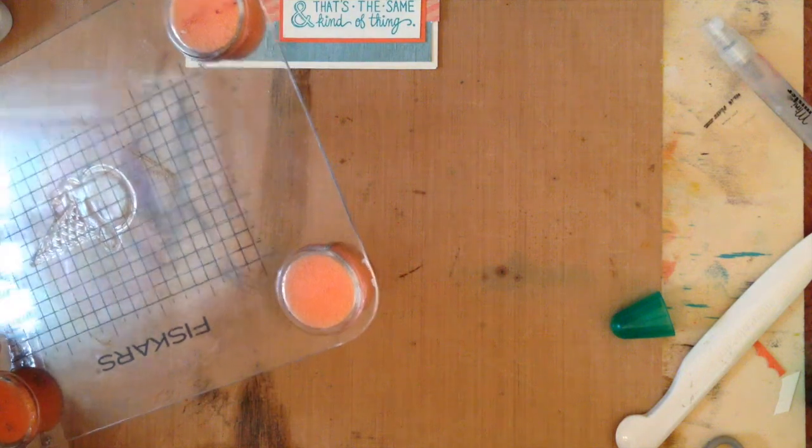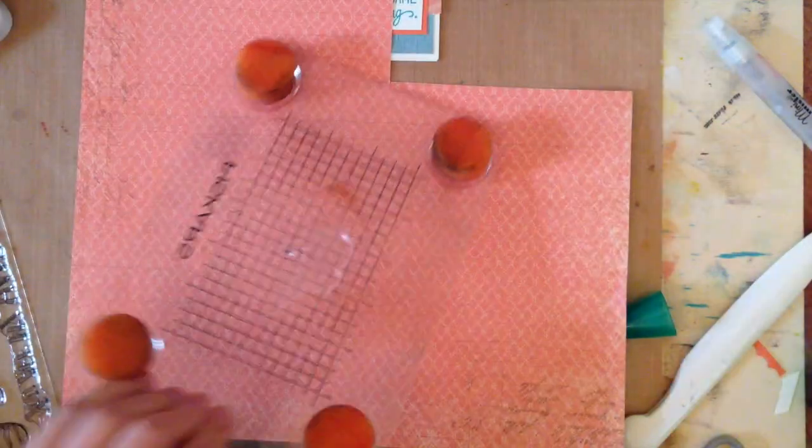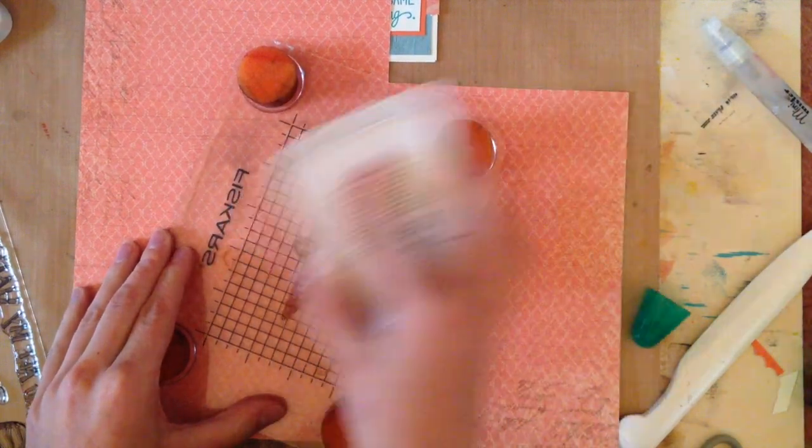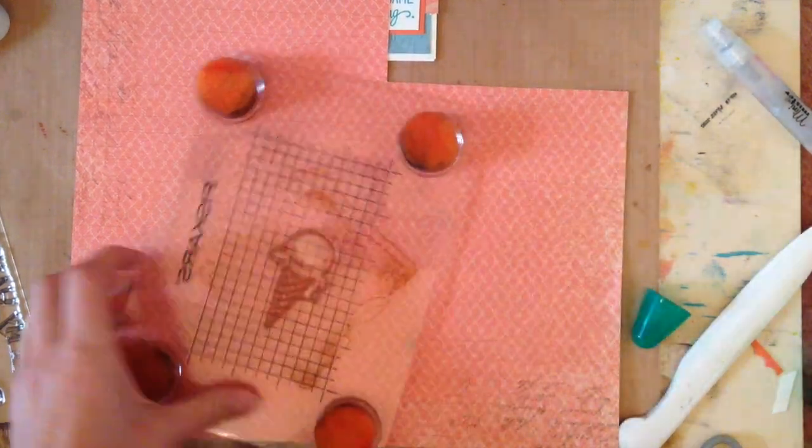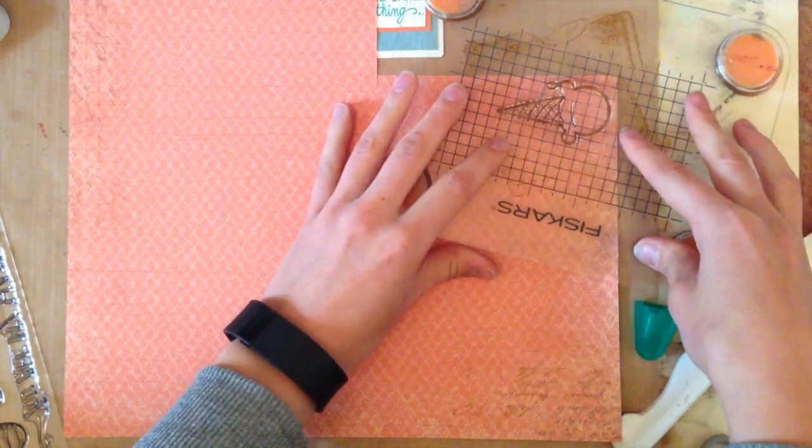I then went in and inked up the stamp again and added it to another piece from the seaside paper pack which is this really great distressed coral colored sorbet cardstock. I inked that stamp up again and stamped the ice cream on the patterned paper.